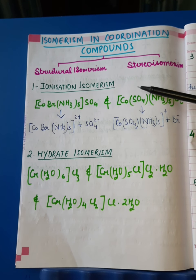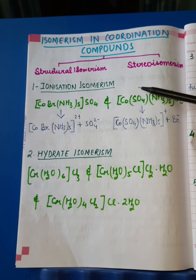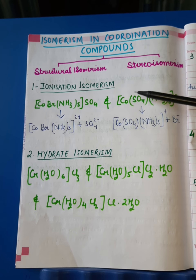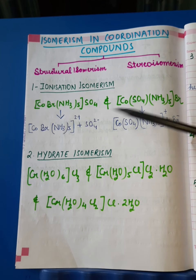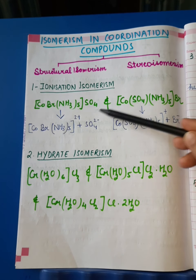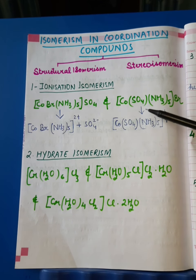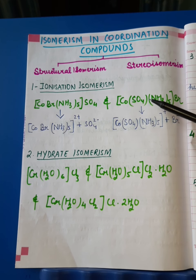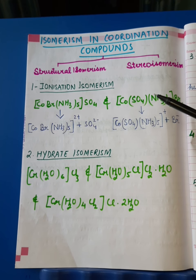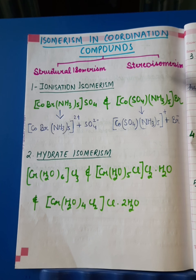Ionization isomerism is seen in coordination compounds when two or more coordination compounds have the same molecular formula — meaning their components are the same, atoms are the same — but they differ in terms of their ionization behavior and furnish different types of ions.